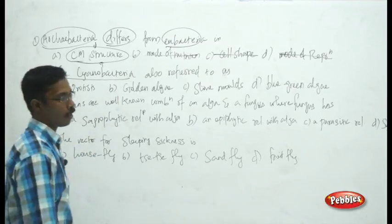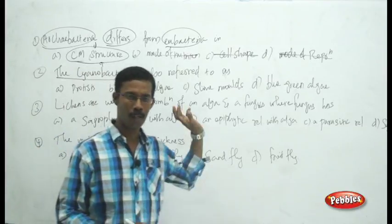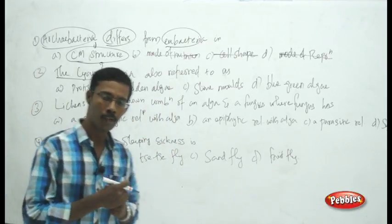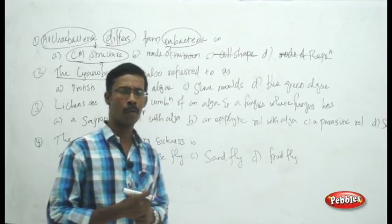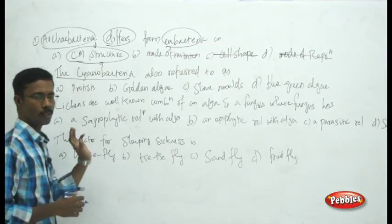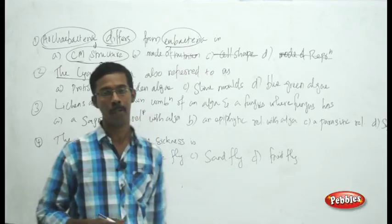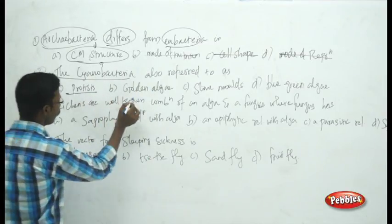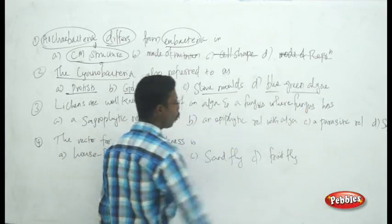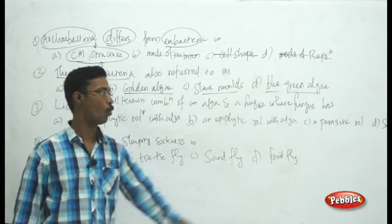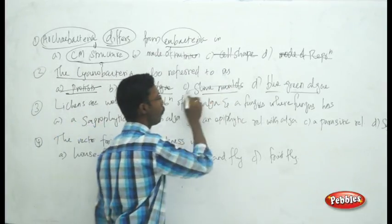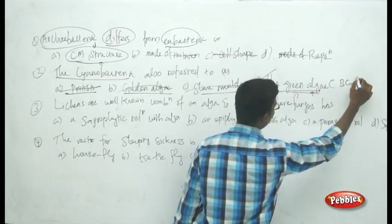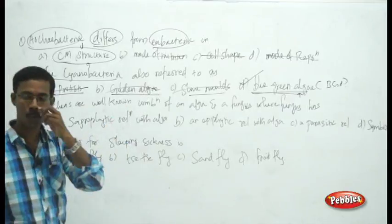The next question: cyanobacteria are also referred to as — Protista, Golden Algae, Slime Mold, or Blue Green Algae? Cyanobacteria belong to Monera (bacteria). Protista, Golden Algae, and Slime Mold belong to eukaryotic cells. The correct answer is Blue Green Algae (BGA).